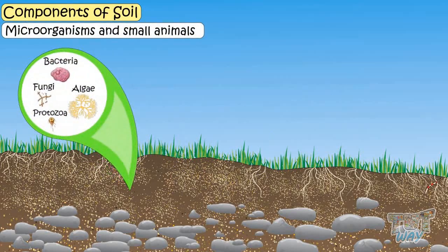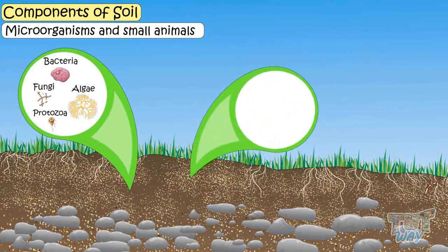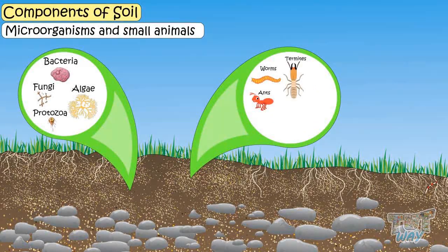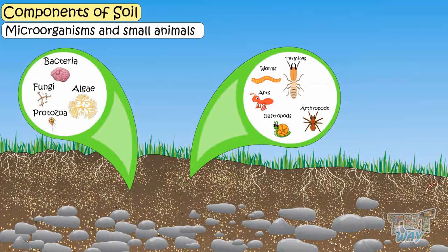Microorganisms and small animals. Small living organisms like worms, ants, termites, gastropods, arthropods and nematodes are present in the soil.